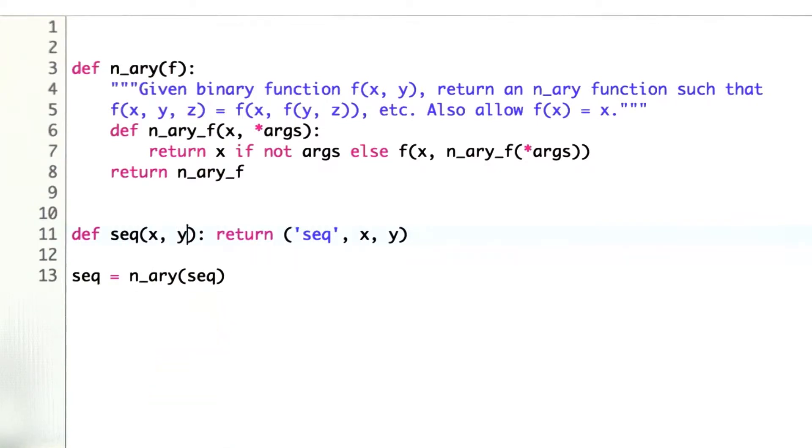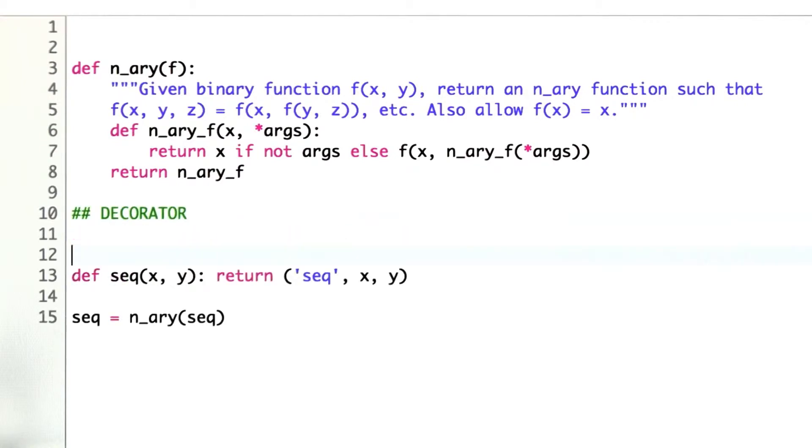The notation is called the decorator notation. It looks like this. All we have to do is say at sign, then the name of a function, and then the definition. This is the same as saying sequence equals n_ary of sequence. It's just an easier way to write it.